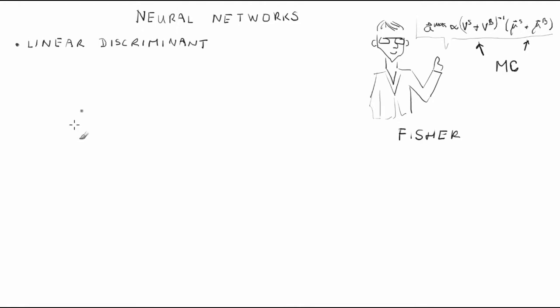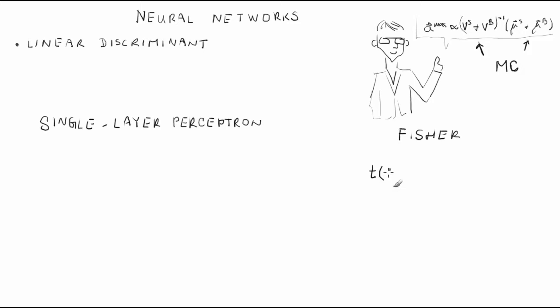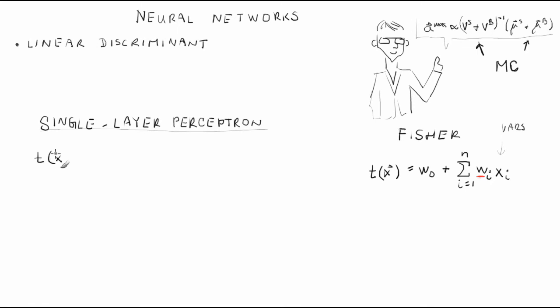Another possibility is the simplest neural network called single layer perceptron. The general form of a linear discriminant is t(x) = w_0 + sum over i from 1 to n of w_i * x_i. The exact form of the single layer perceptron test statistic is t(x) = f(w_0 + sum over i from 1 to n of w_i * x_i), where f is called the activation function.